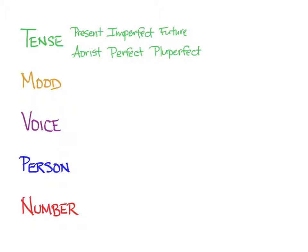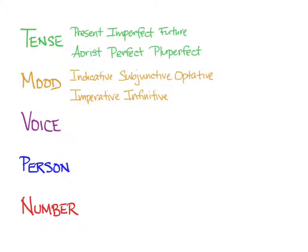You've now met all of those tenses in the indicative mood. Greek also regularly uses subjunctive, optative — which is the mood that is the topic of this video — imperative, and you've started learning about infinitives, and participles are in your near future. Greek has three voices: active, the one we've done so far, in which the subject of the verb is doing the action of the verb. And then there's middle and passive, which we'll learn about in the future.